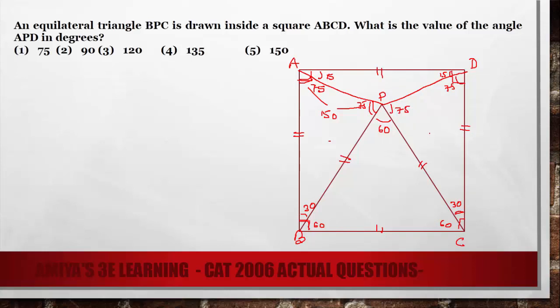15, 15 is nothing but total is 30 and in a triangle A, P, D, the summation should be 180 degrees. Here we have 15, 15, 30. So this should be 150 degrees to make 180 degrees or we can work on this point also.